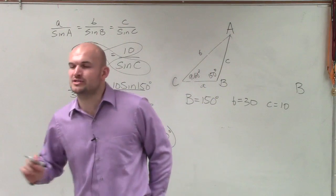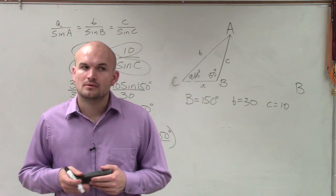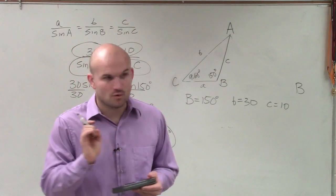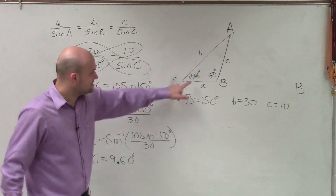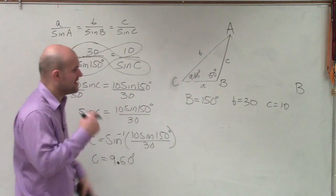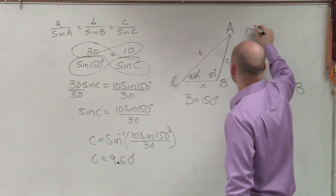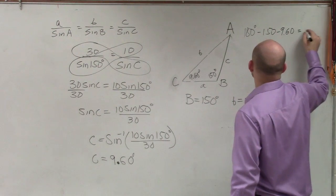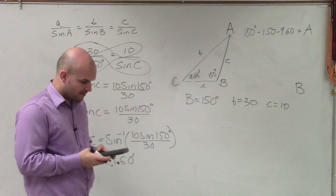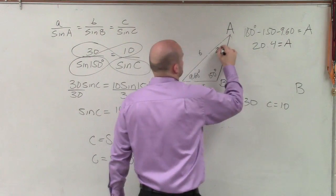That's 150 degrees. Now, is it possible to have more than one obtuse angle in a triangle? Is it possible to have more than one 90-degree angle? No — it's not possible to have more than one obtuse angle. So does it seem fitting that B is 150? I know C can't be larger than, or even equal to, 90 degrees. So: 180 minus 150 minus 9.60 equals angle A. That gives 180 minus 150, which is 30, minus 9.60 — so angle A equals 20.4 degrees.